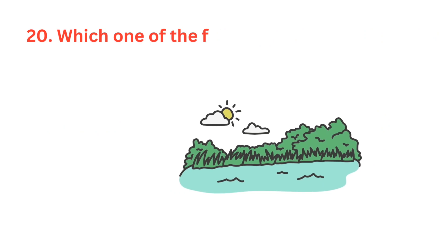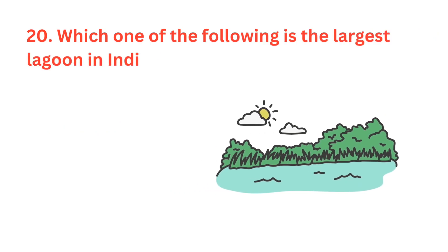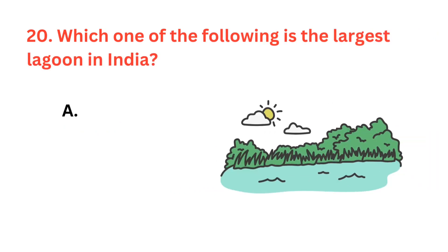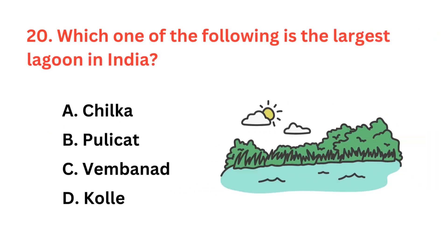Which one of the following is the largest lagoon in India? The correct answer is option A, Chilka Lake is the largest lagoon.